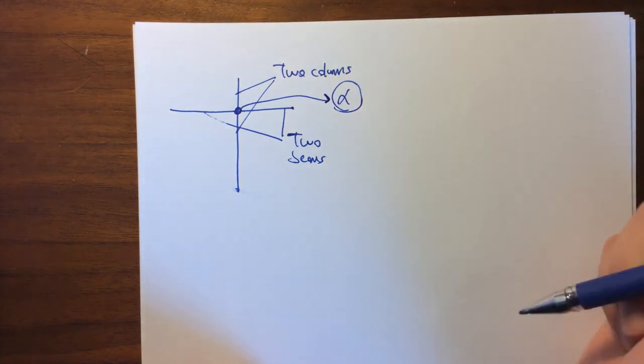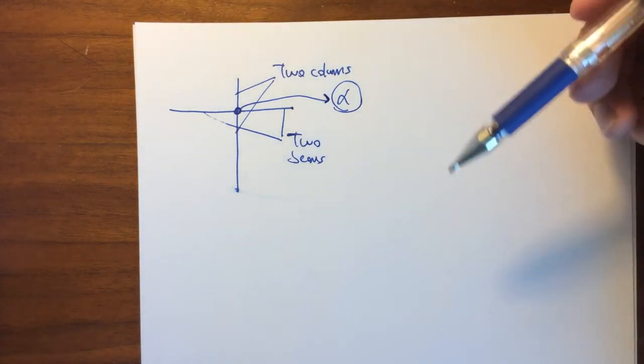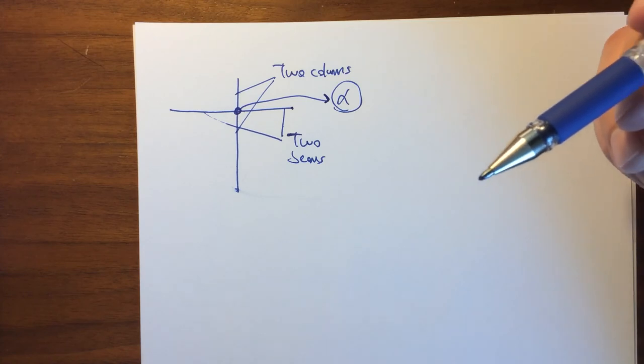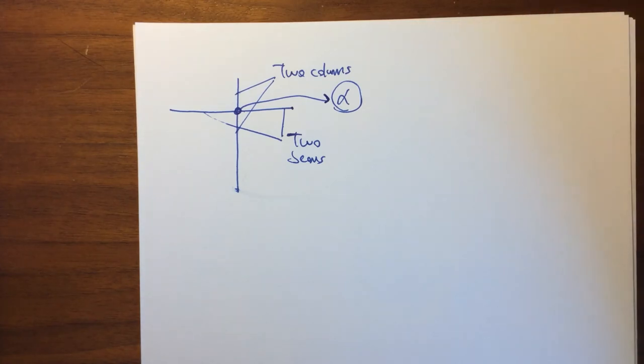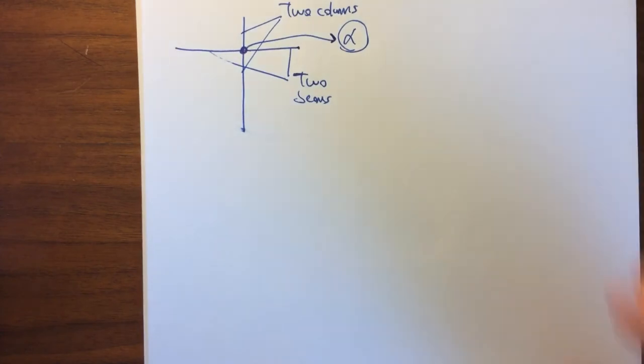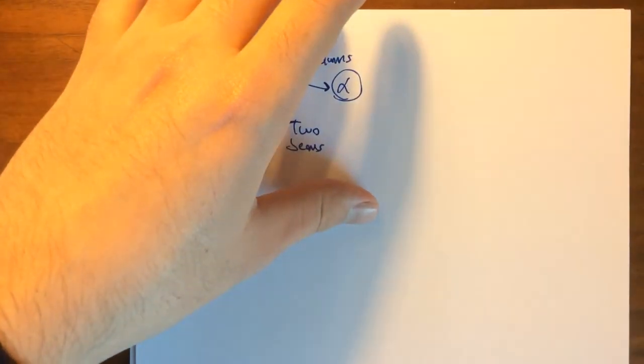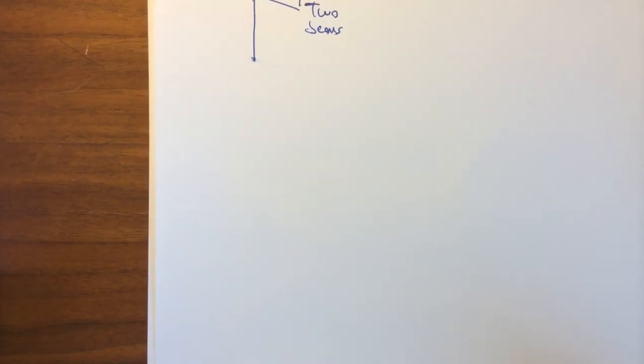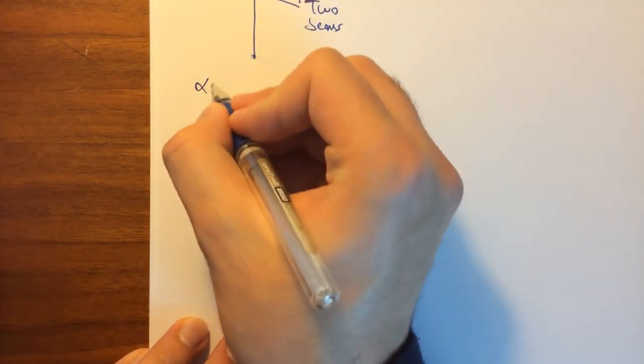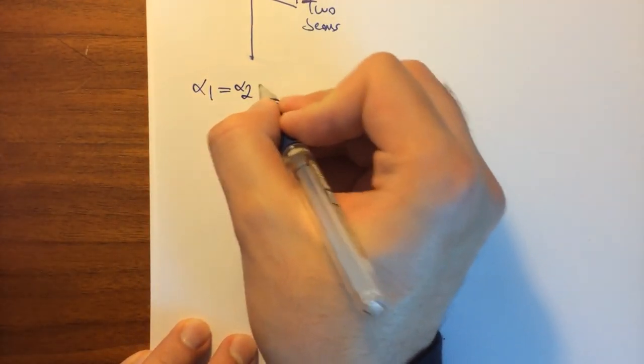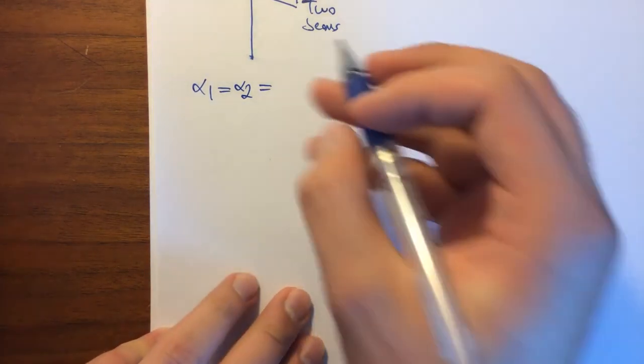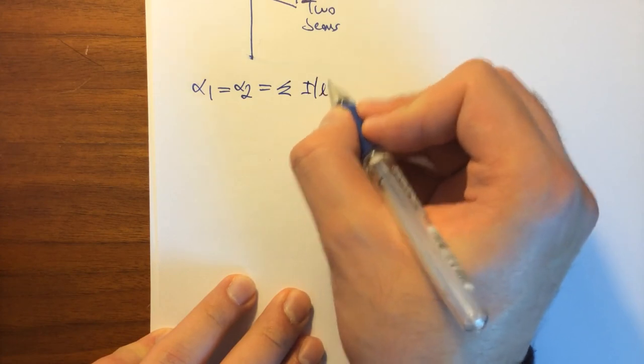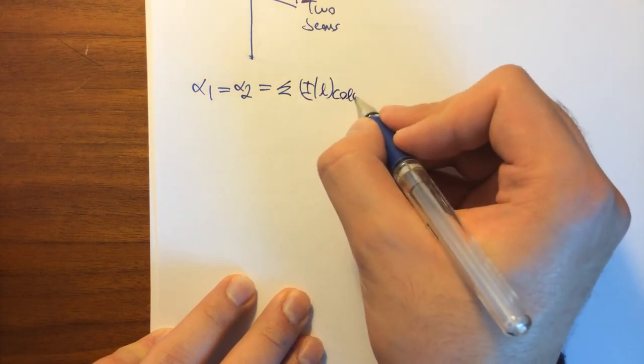We want to get the alpha value here to understand if we need to account for second-order moments, as this is one of the most key concepts in column design. As you know from our lecture notes, the alpha value is equal from both sides and equals the ratio between the summation of the I over L ratio of the columns.